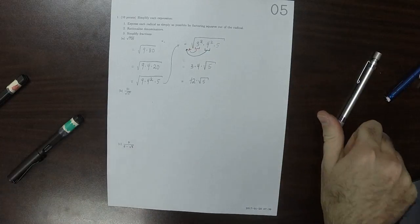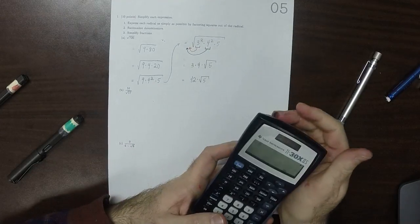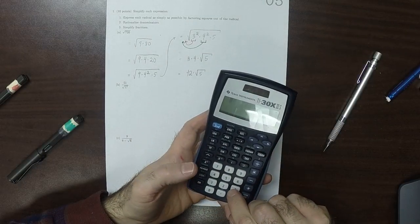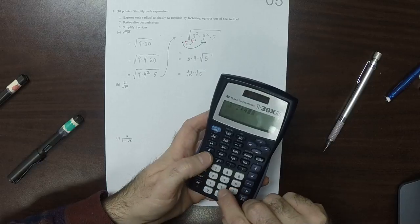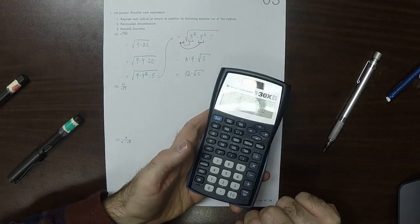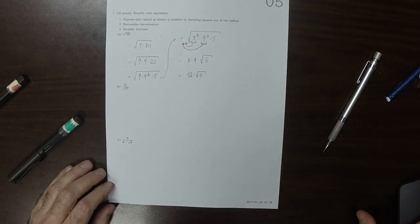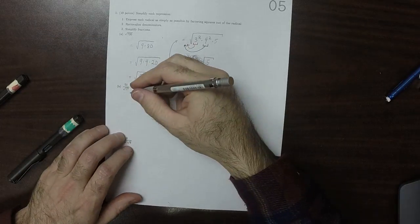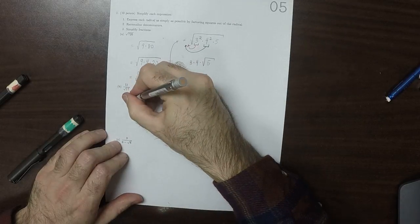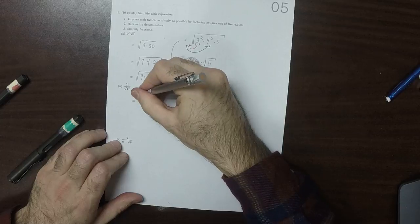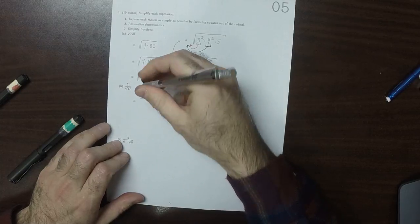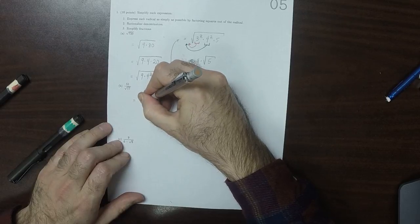So let's check that real quick. So that would be 3 squared times 4 squared times 5 is 720. OK. So now we want to simplify this by rationalizing the denominator. So this would be equal to 51 divided by square root 17. That's what we were given.